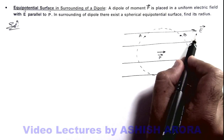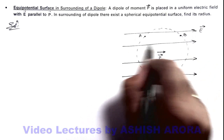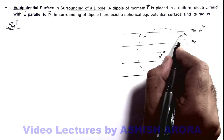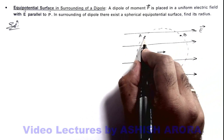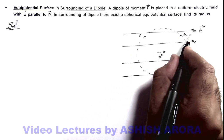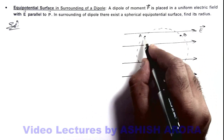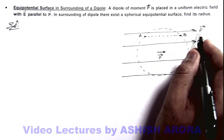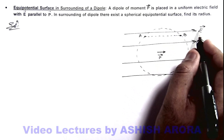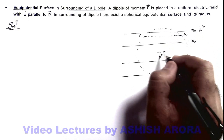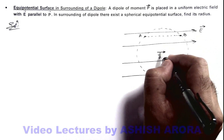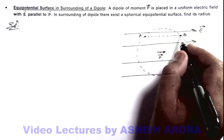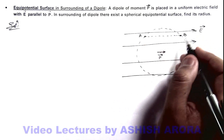We have studied that in the direction of electric field, potential decreases. So point B will be at lower potential and point A will be at higher potential in this external electric field. Therefore, whichever potential drop exists between the two points due to the external electric field must be exactly compensated by the potential difference due to the dipole, so that the two points will be at the same potential.